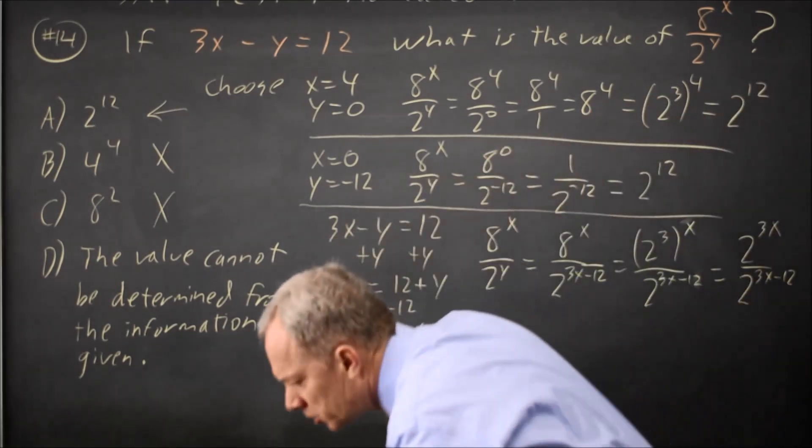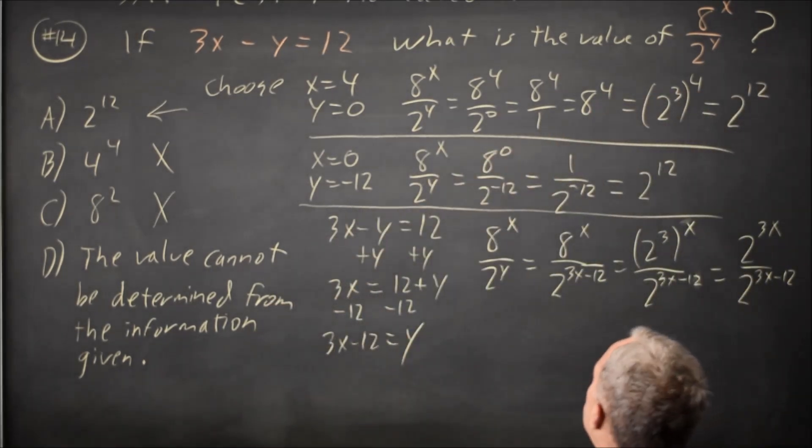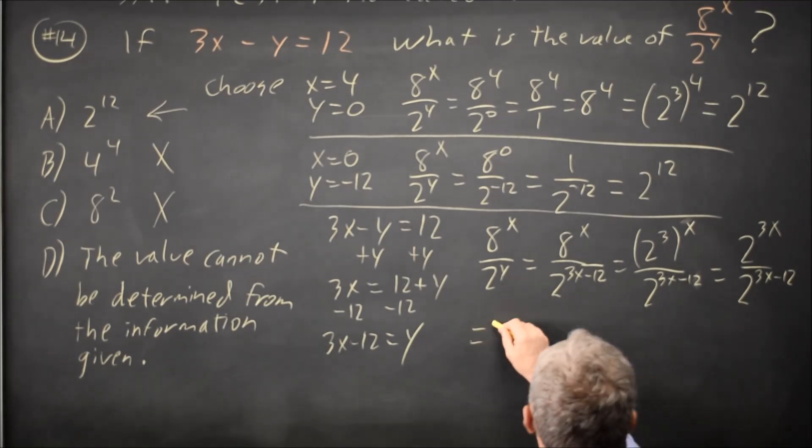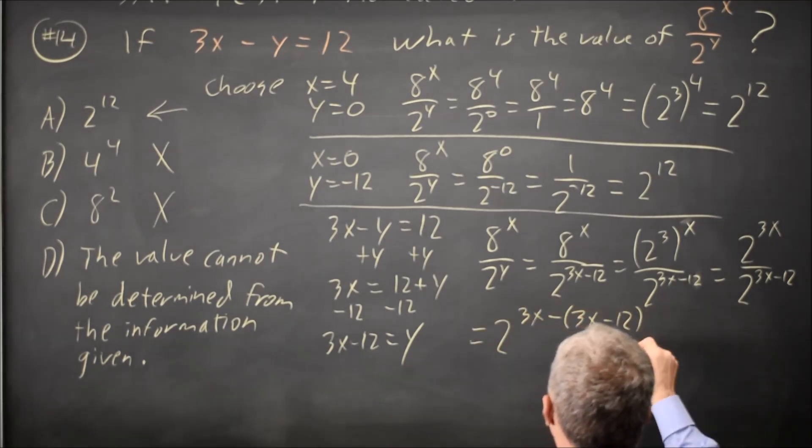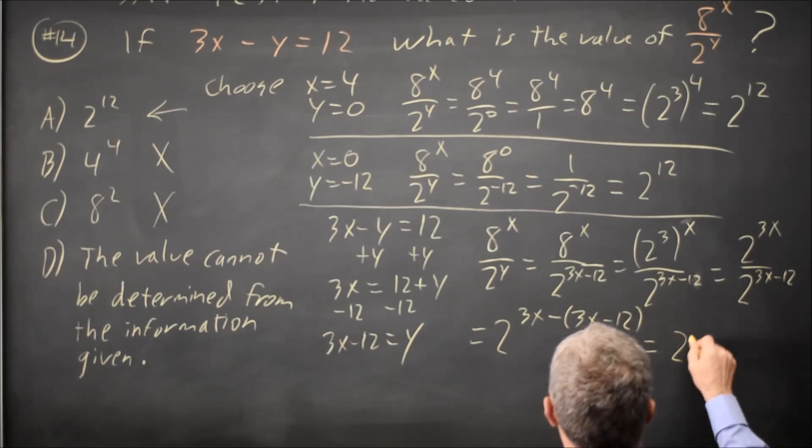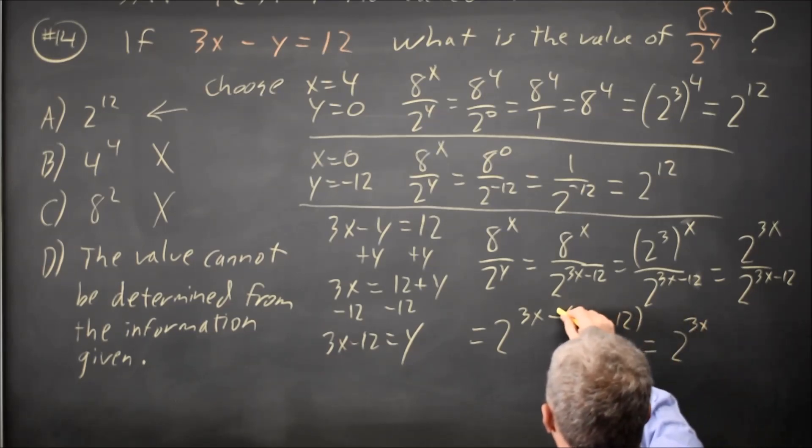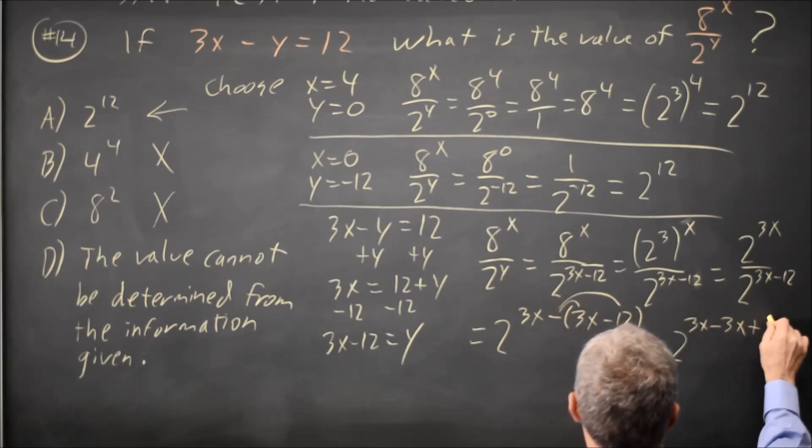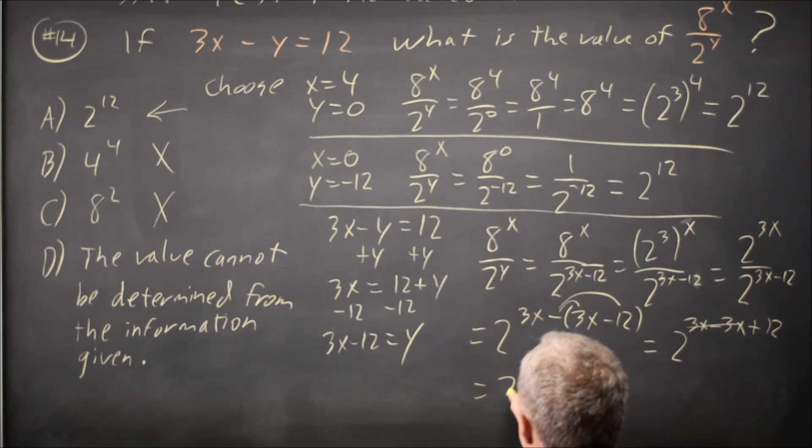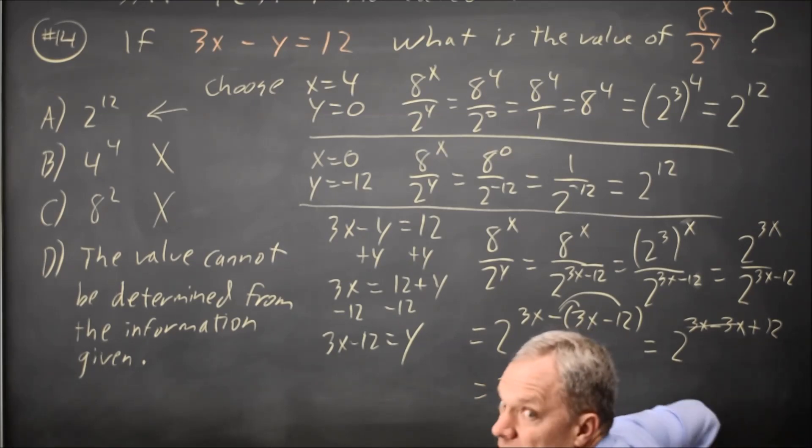If you're taking a quotient with powers at the same base, you subtract exponents. So this is 2 to the 3x minus 3x minus 12. Which is 2 to the 3x distributing the negative minus 3x minus negative 12 is plus 12. 3x minus 3x is 0, so that is 2 to the 12 algebraically.